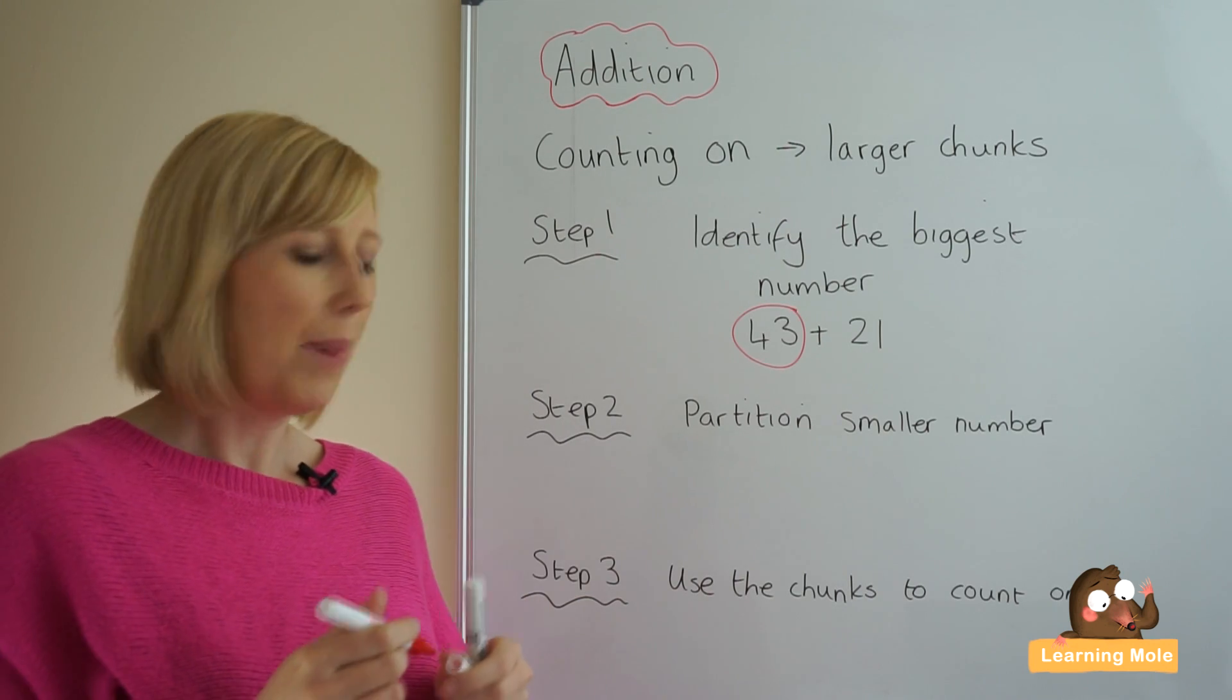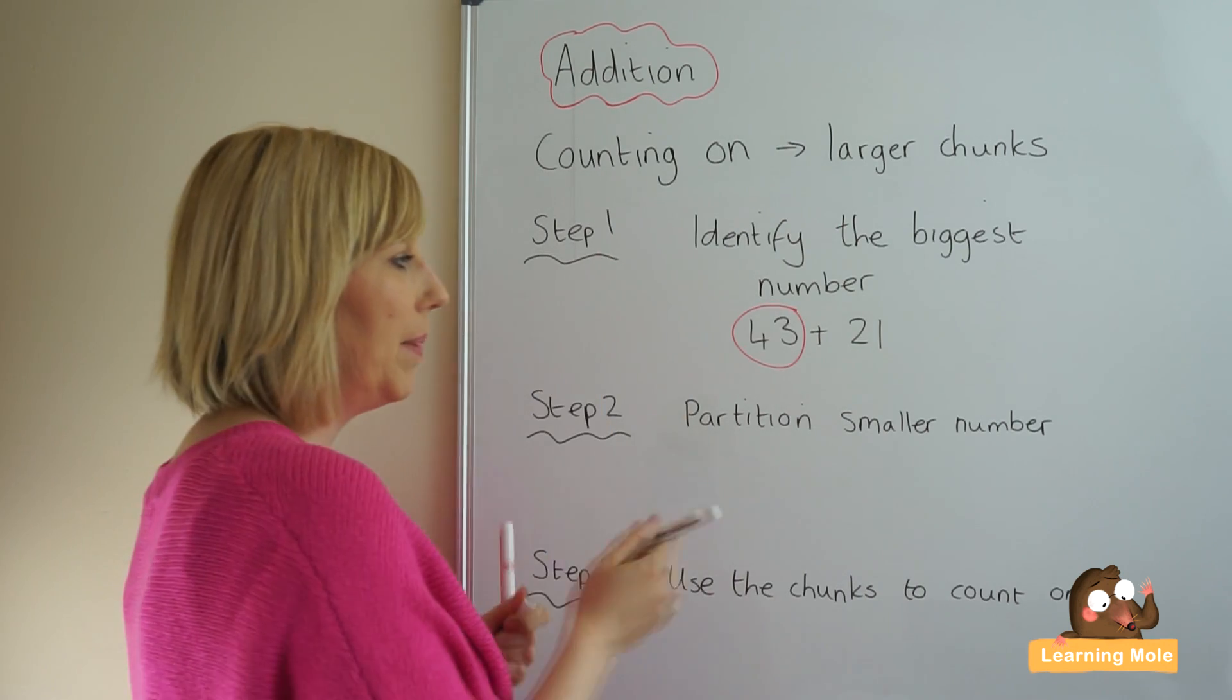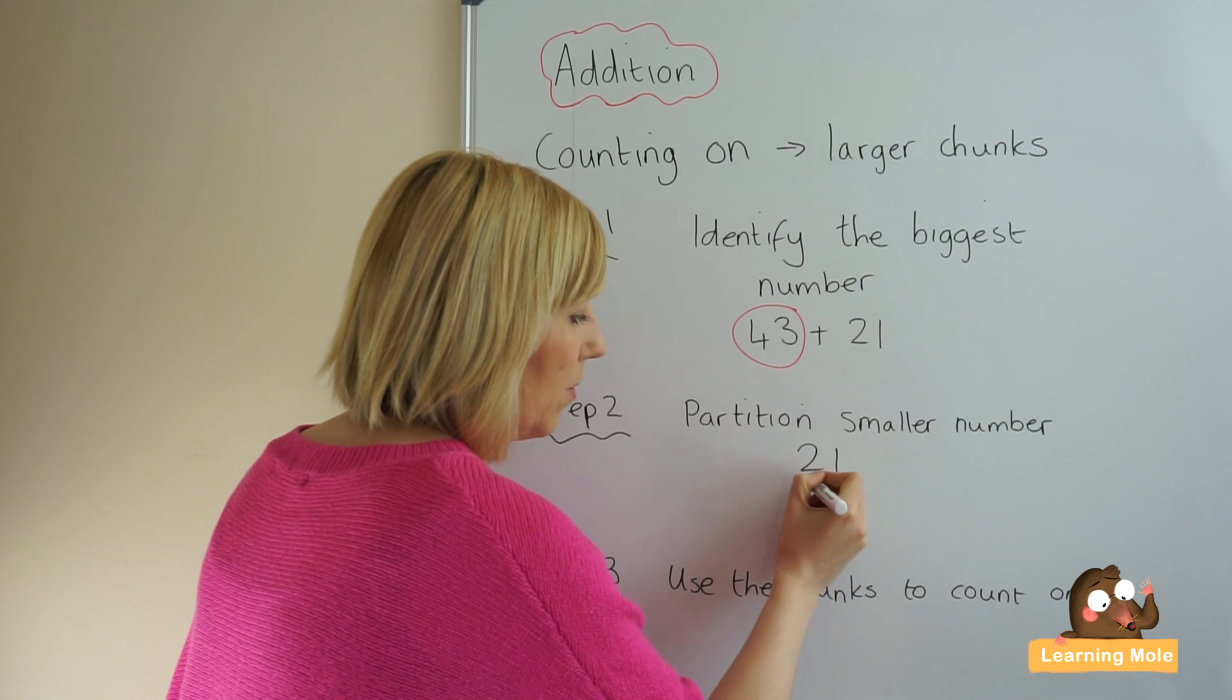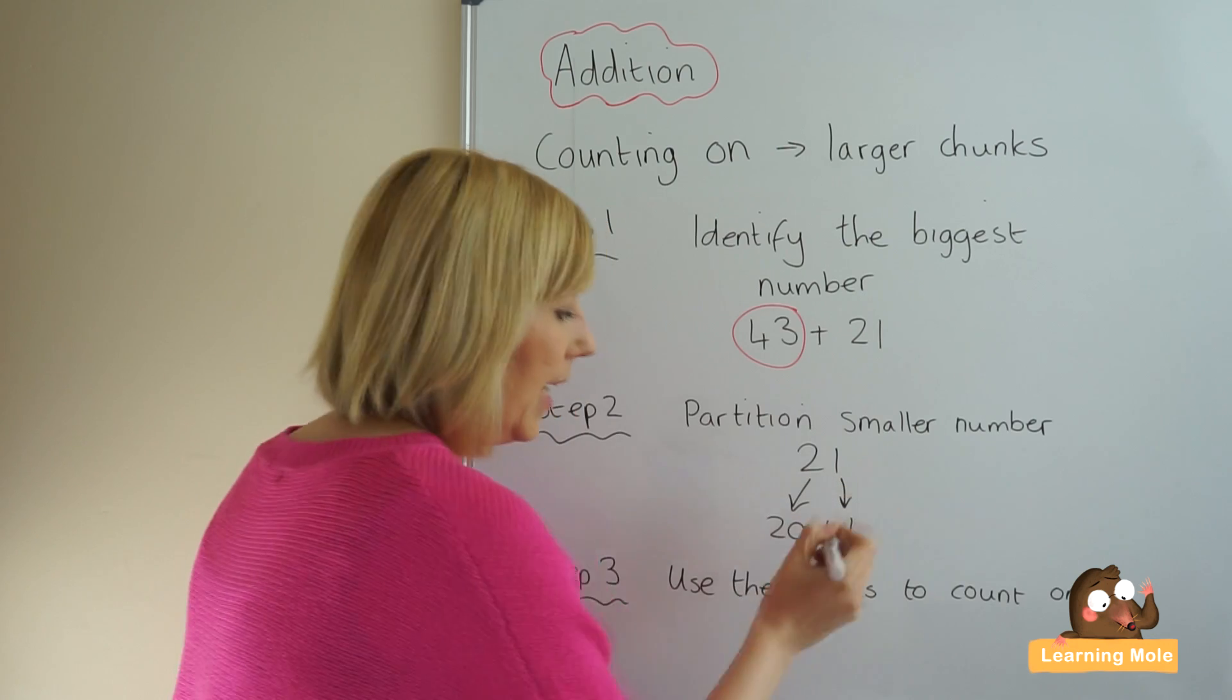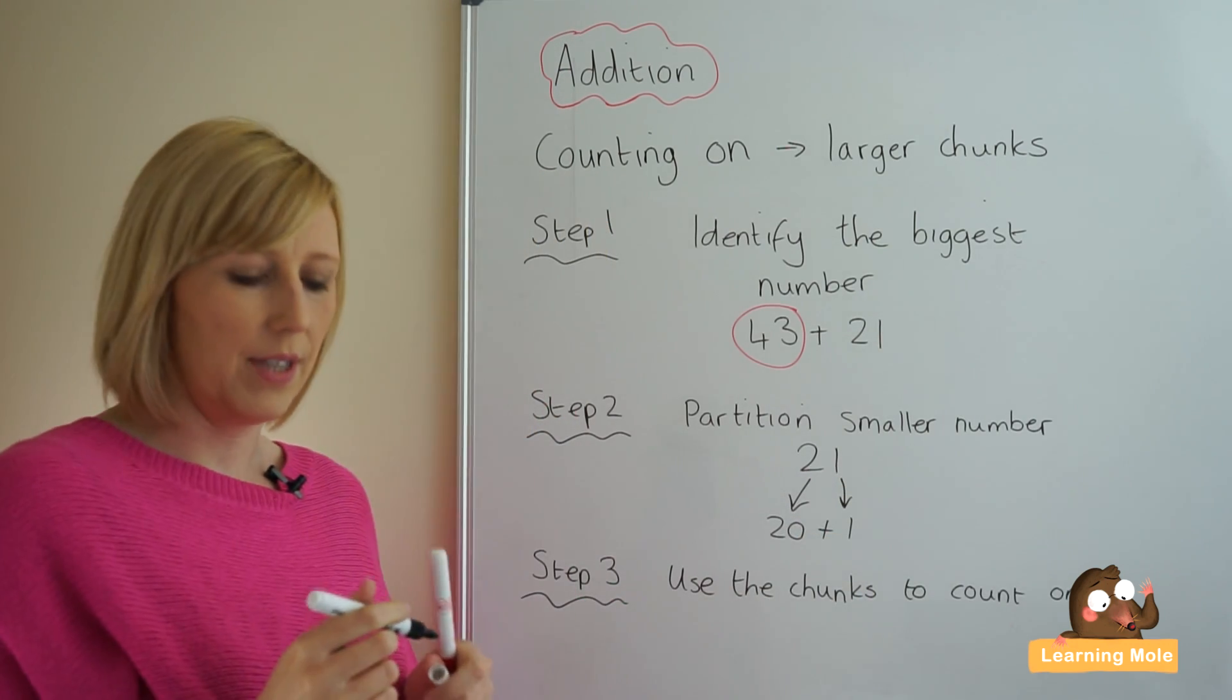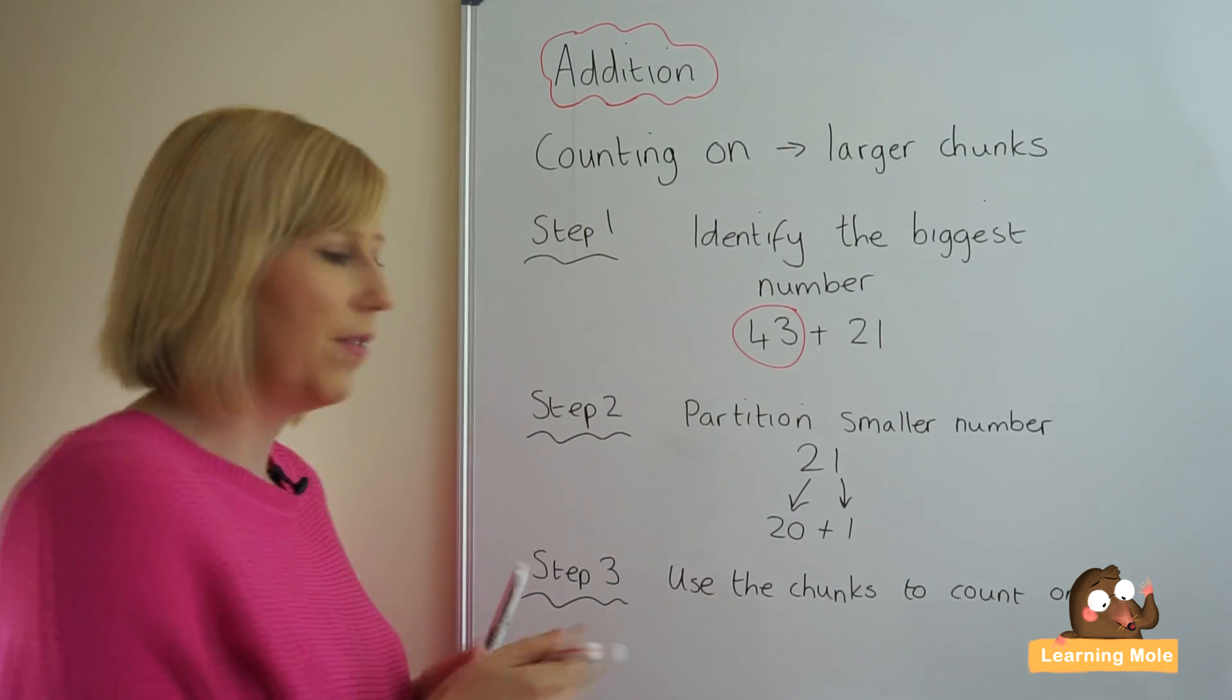Step two, partition the smaller number and we've already identified the biggest number so we know the smallest number is 21 and we're partitioning that into 20 and 1 into our tens and our units and they're going to form our chunks for calculating.